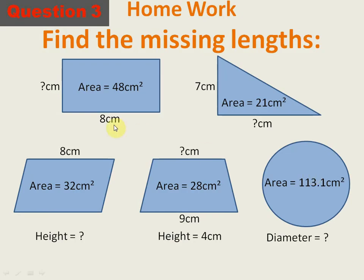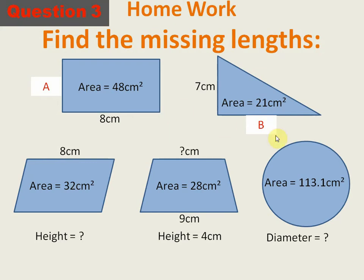Question number 3 is also homework. First figure is a rectangle where the area is given and you have to find the width. Next is a triangle with formula ½ × base × height — the base is unknown, height is 7 cm, and area is 21 cm². So: 21 = ½ × B × 7, and you can calculate the base. Next is a parallelogram where the area is given and you have to find the height.